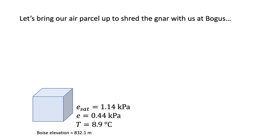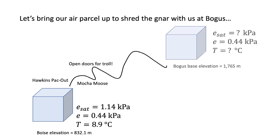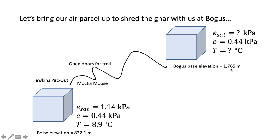We all probably have some intuitive understanding that the air up in the mountains is colder, so we would expect our parcel to cool along the way. We're going to drive up Bogus Basin Road, pass Hawkins, maybe stop at Mocha Moose, open our doors over that cattle guard for the troll, and ultimately wind up at the base area of Bogus Basin, which is at an elevation of 1,765 meters. Let's check in with our parcel and see what we know and don't know.